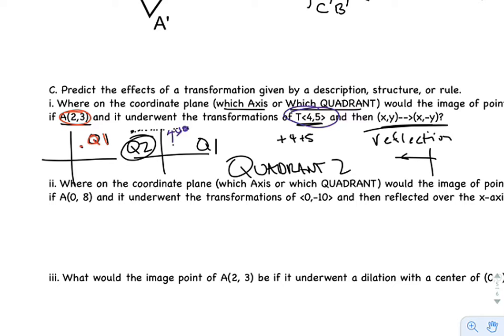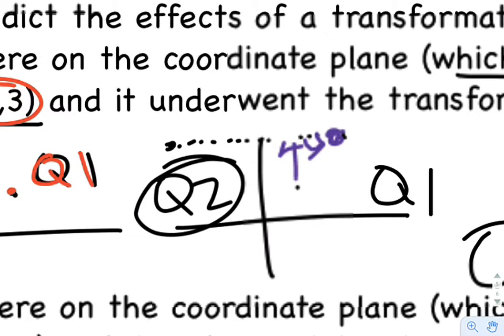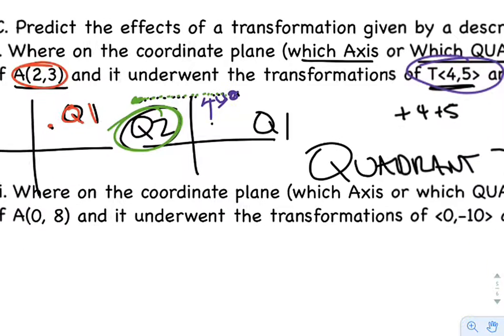And then our final transformation is a reflection, and that reflection, because it's (x,-y), will be over the y-axis. So the final movement will take it here. This is step 3, which means quadrant 2 will be oriented. So this will end up solidly in quadrant 2.